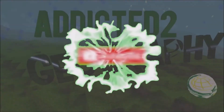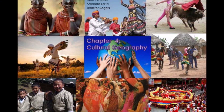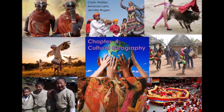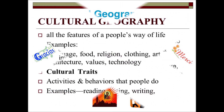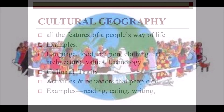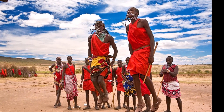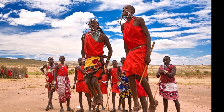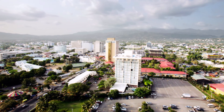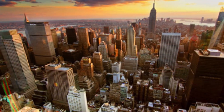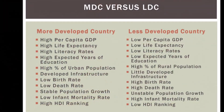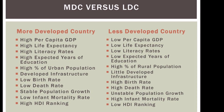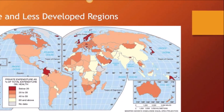Cultural geography studies the relationships between different cultures and places on earth. Geographers look at how cultures are distributed over space and how they express their practices. Development geography studies the quality of life and standards of living within different communities, looking at economical, political, and social factors that affect the quality of living.